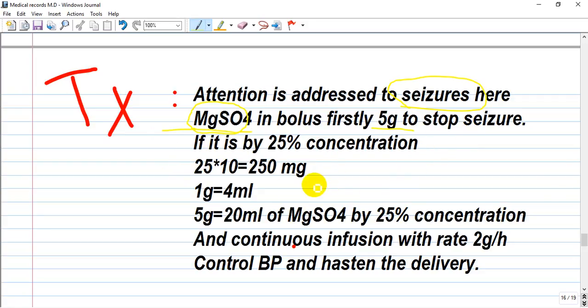I wrote here a calculation. For example, if one ampoule of magnesium is 25% concentration, and if we are calculating like one milliliter, it will be 250 milligrams. One gram equals four milliliters. So for giving 5 grams, we have to give in a bolus 20 milliliters of magnesium by 25% concentration, and continuous infusion after with a rate of 2 grams per hour. Many sources give 1 gram per hour, but it is for discussion.